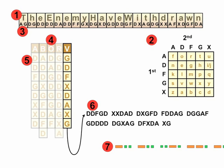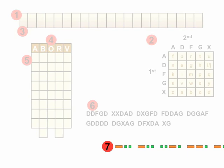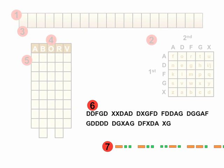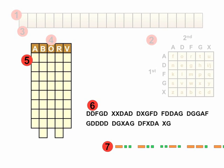Now we imagine we are the recipient of that message. We work backwards through the sequence — from step 7 back to 6, which is just Morse code. Then from 6 to 5: since we're going backwards, we use the ABORV matrix. There is a tricky part — where do the two extra squares on the bottom go? We know we have to have those two squares from the letter count, but where they go is for you to figure out. So now we place the message into the ABORV matrix.